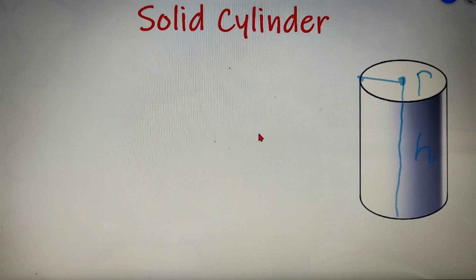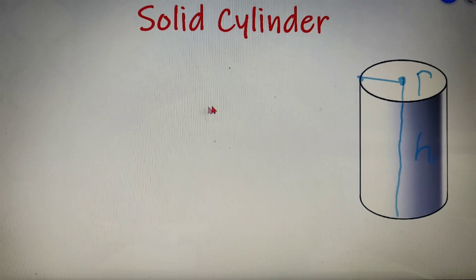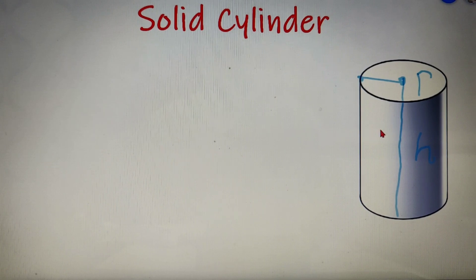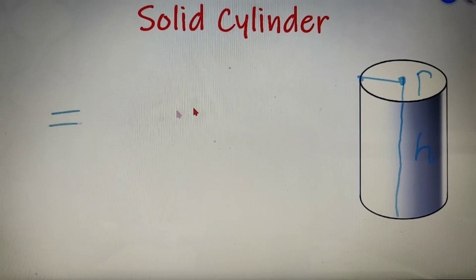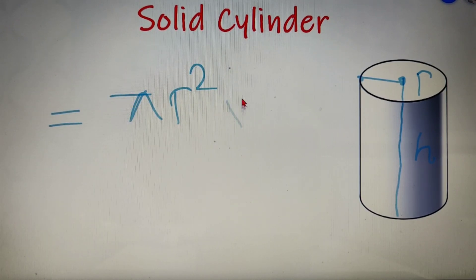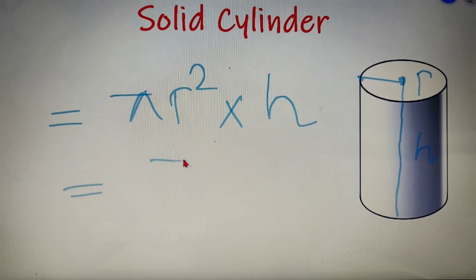Every three-dimensional figure has an additional property: it can hold some amount of liquid or fluid inside it. The total amount of liquid it can hold is called the volume of that figure. The volume of a solid cylinder equals the area of the cross-section multiplied by the height — that is, πr²h.